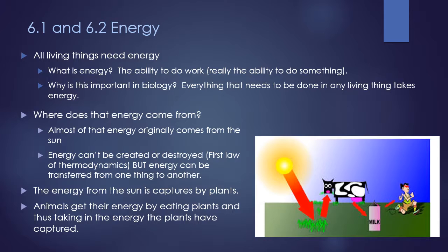Energy can't be created or destroyed — this is the first law of thermodynamics. But energy can be transferred from one thing or one form to another. The energy from the sun is first captured by plants, which convert sunlight energy into sugar, a form usable by other living things. That plant energy can then be captured by animals who eat those plants, and other animals can get energy from eating plants or from eating other animals, such as drinking milk from a cow or eating meat.